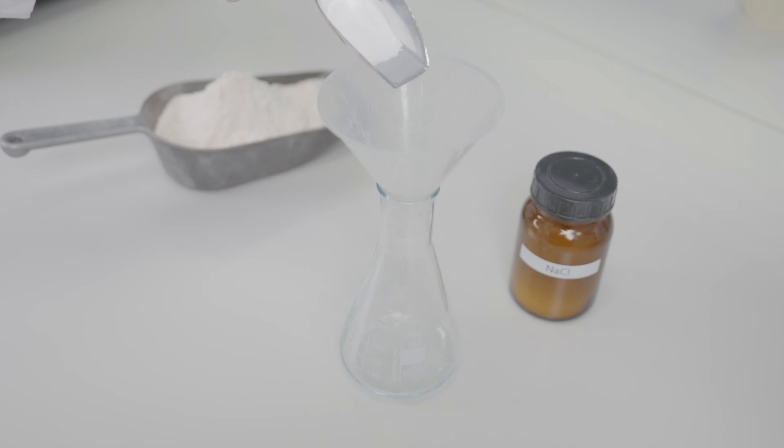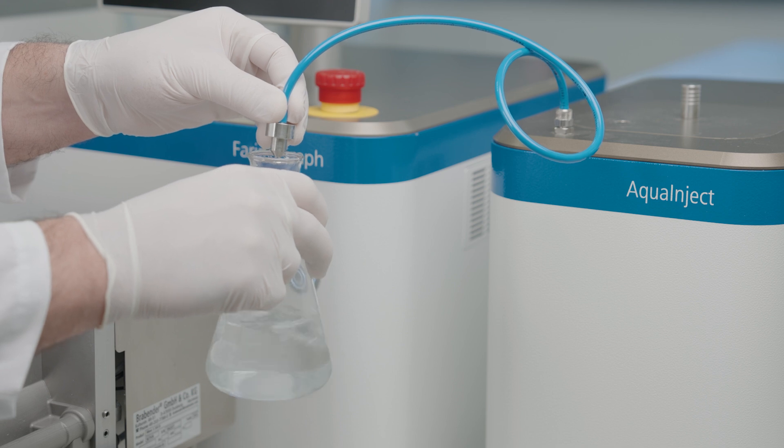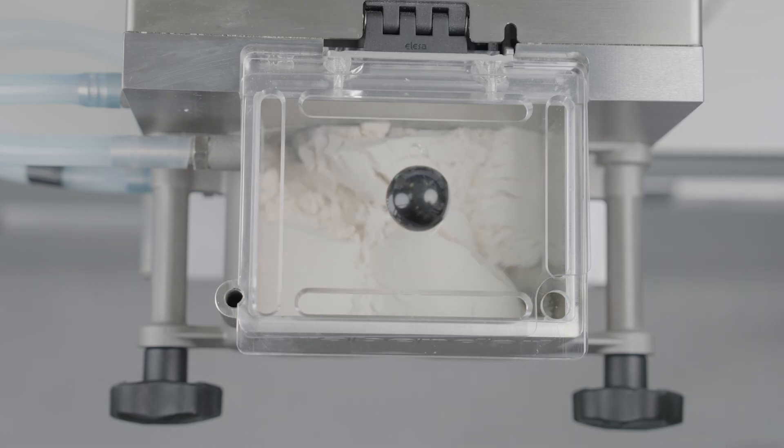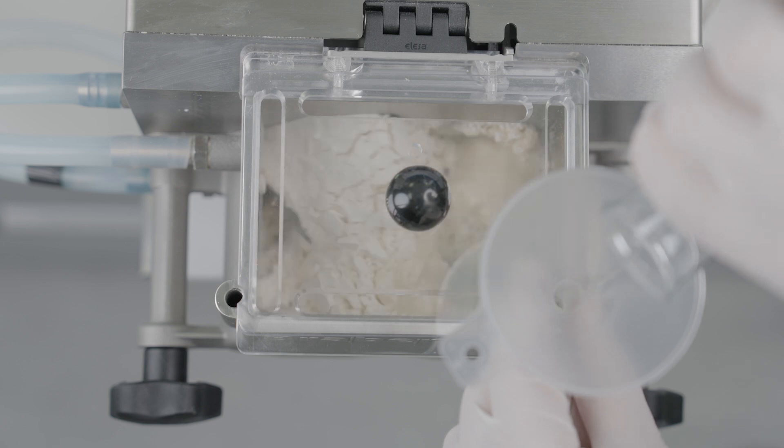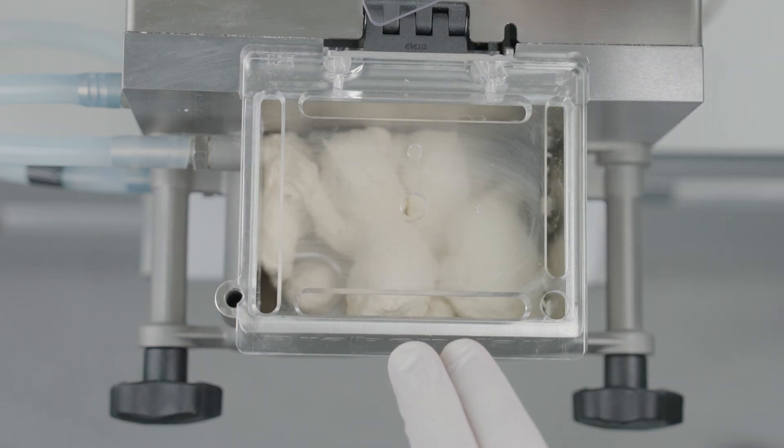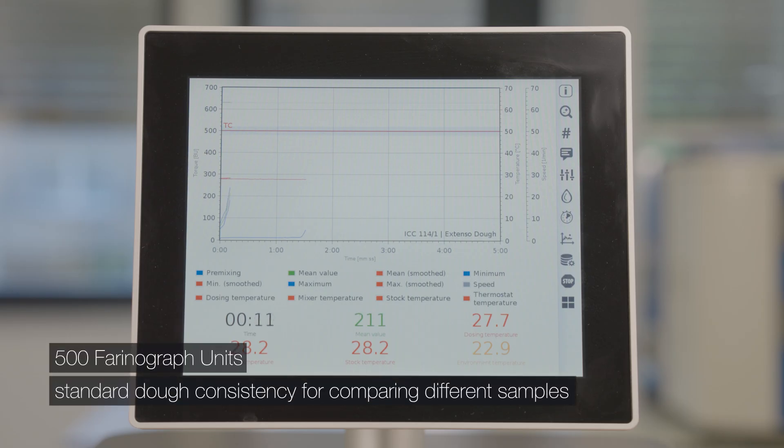Weigh out 6 grams of salt and add it to the beaker. Let the aqua inject dose the water to the beaker and create a water salt solution. After pre-mixing, add the salt solution within 25 seconds to the mixer. Scrape down the dough residues and close the lid with plexiglass plate. After five minutes, the consistency should be at 500 farinograph units.